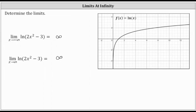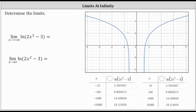Now let's verify this by looking at a table of values as well as the graph of the given natural log function. On the right, we have the graph of f(x) equals the natural log of the quantity two x squared minus three. As x approaches negative infinity, we are moving to the left along the function. As we move left, we can see the function values are increasing without bound — not extremely fast, but they do continue to go up and increase without bound — which verifies the limit of the natural log of the quantity two x squared minus three as x approaches negative infinity is infinity.